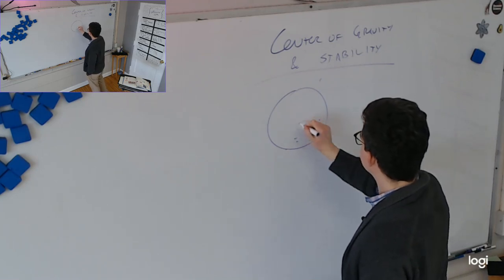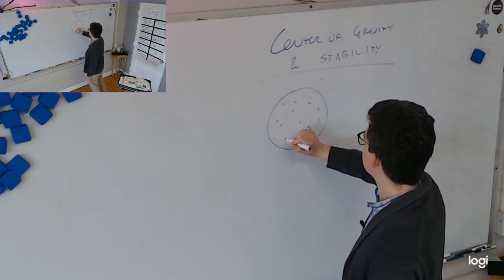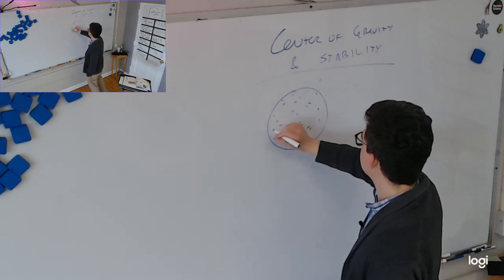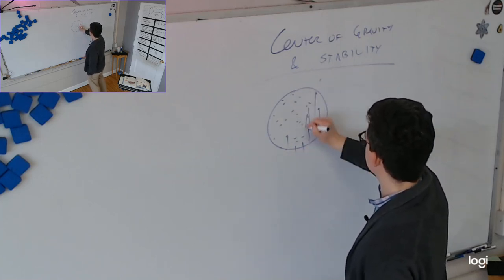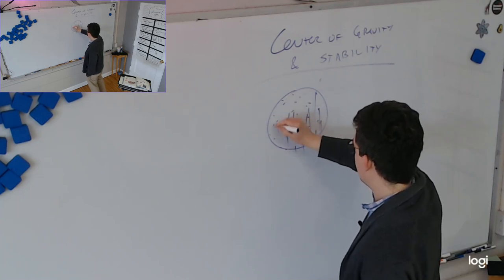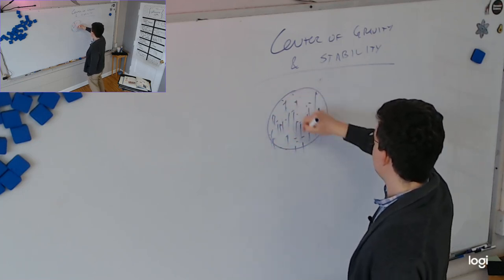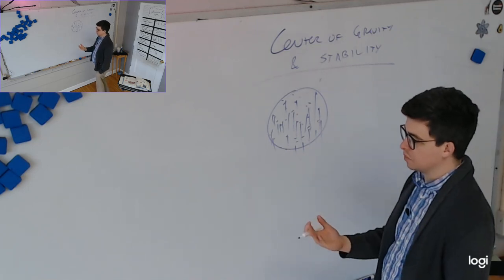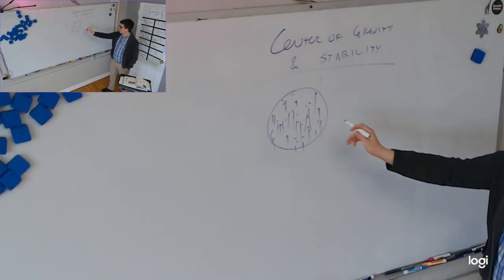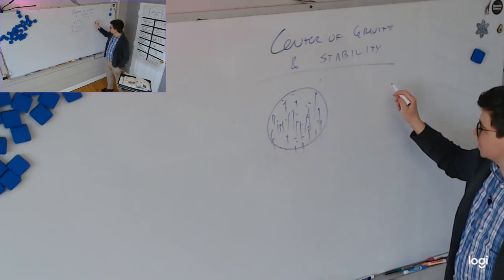In reality, every single atom that makes up this ball is pulled on by a certain minuscule force of gravity, right? That makes sense. The atoms are mass, and we know the mass is what allows objects to interact with the gravitational field of the universe. But this is complicated, and we do not like it when things are complicated in physics.